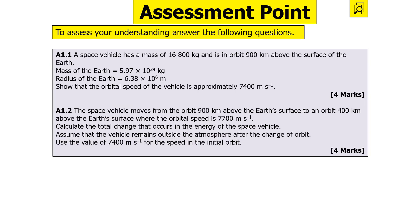The next question says: a space vehicle of mass 16,800 kg is in orbit 900 km above Earth's surface — show its orbital speed is approximately 7,400 m/s; then it moves to an orbit 400 km above the surface where the orbital speed is 7,700 m/s — calculate the total change in energy of the space vehicle. Assume it remains outside the atmosphere and use 7,400 m/s for the initial speed. Pause the video now.